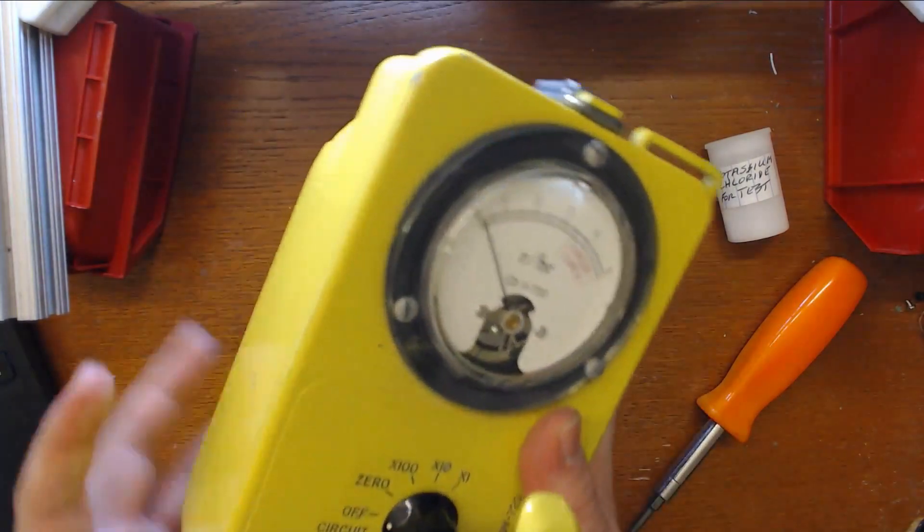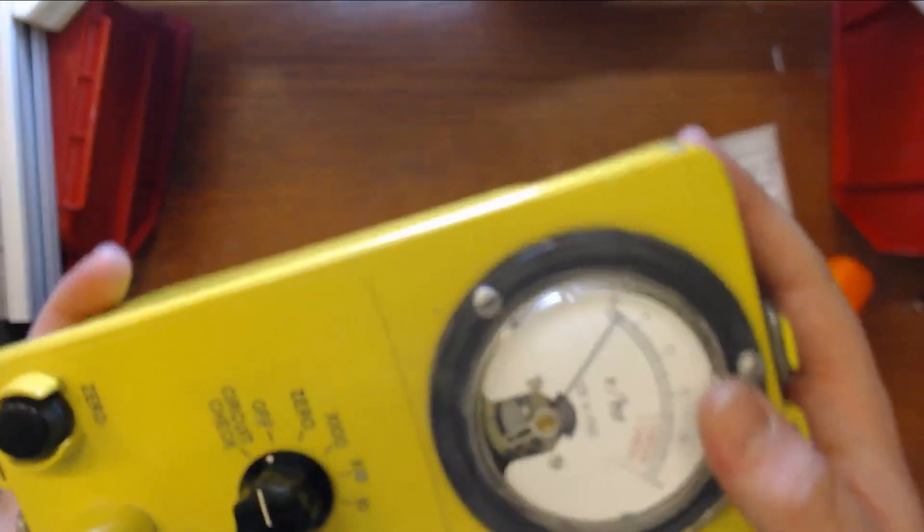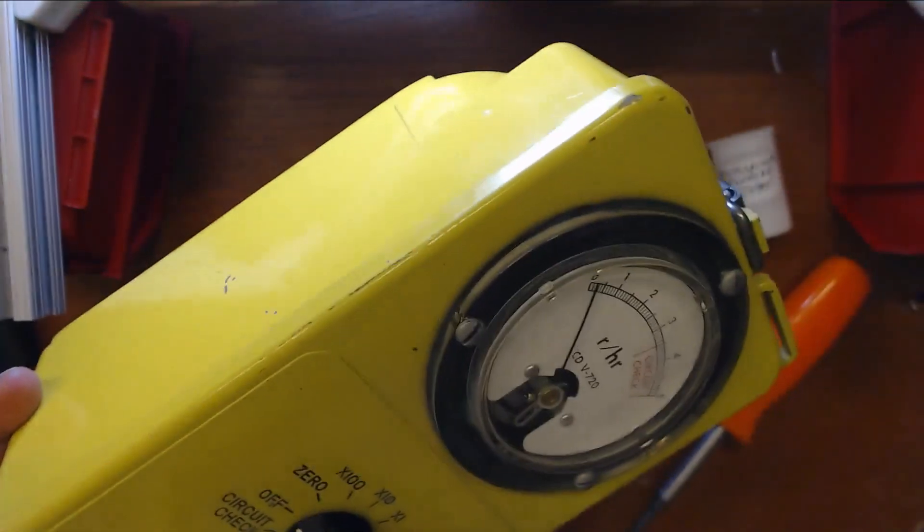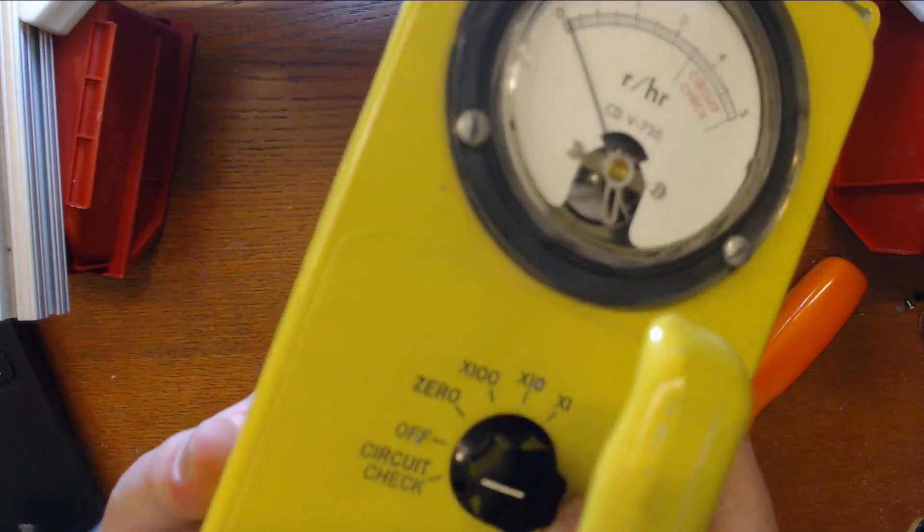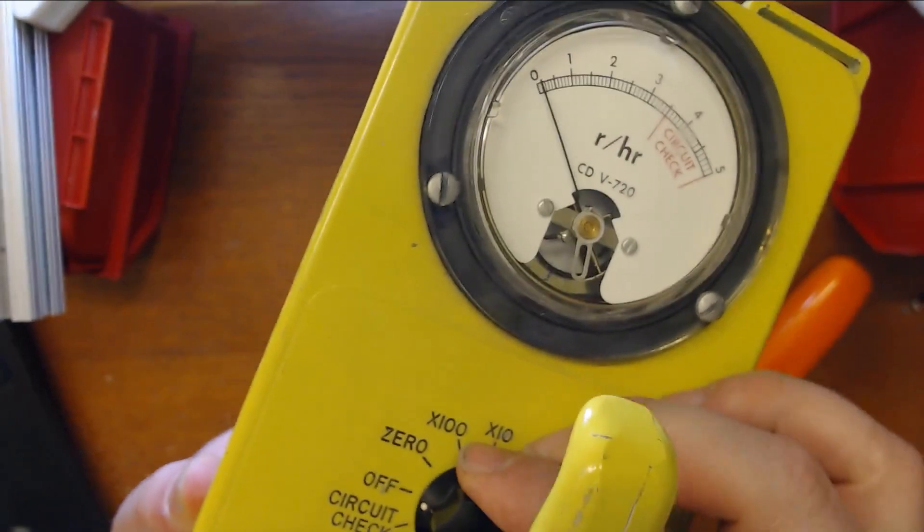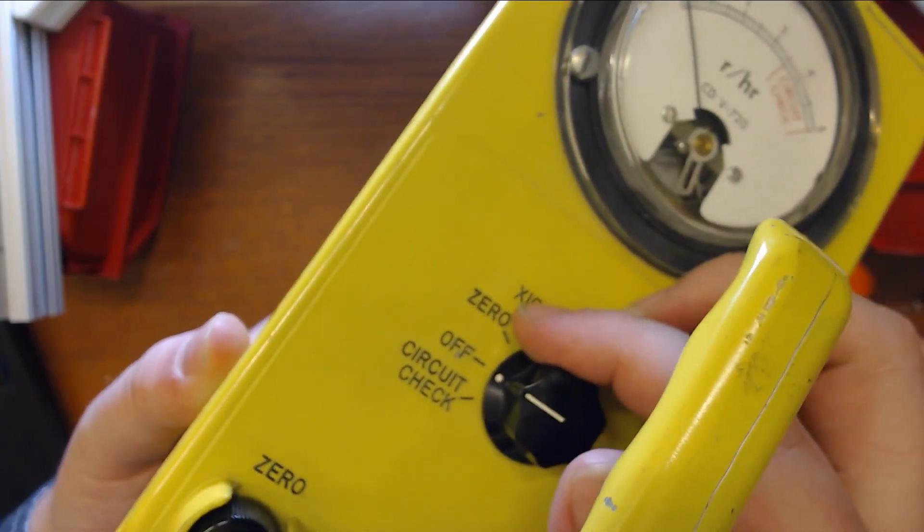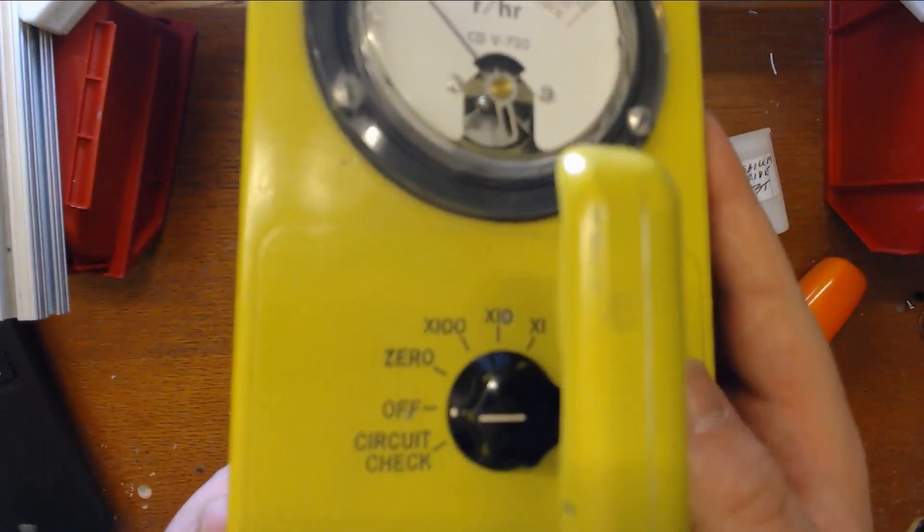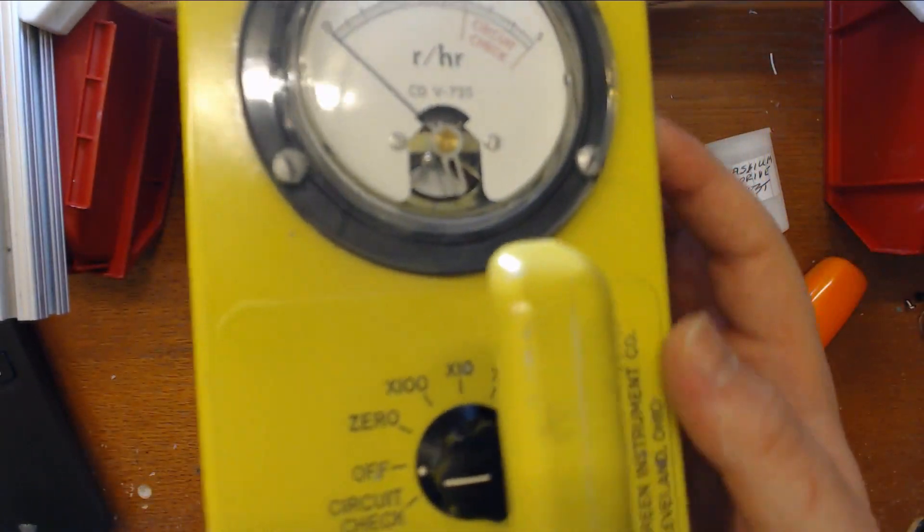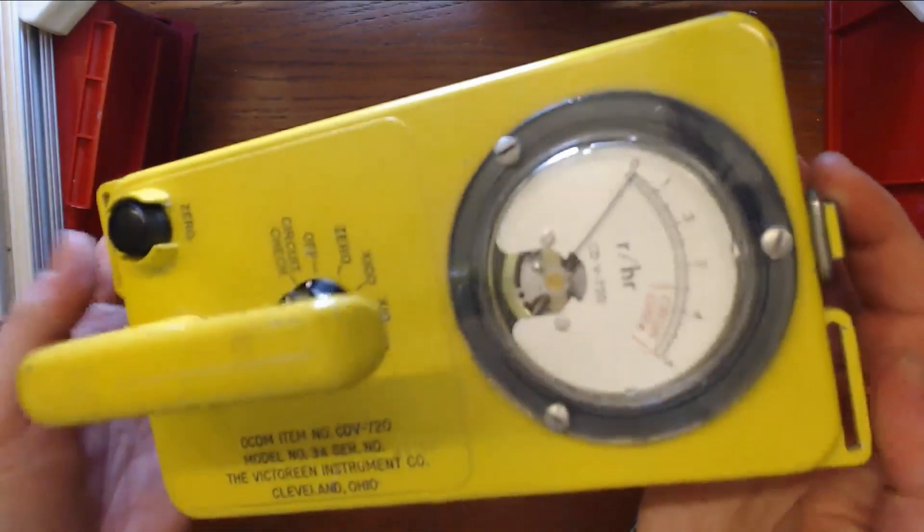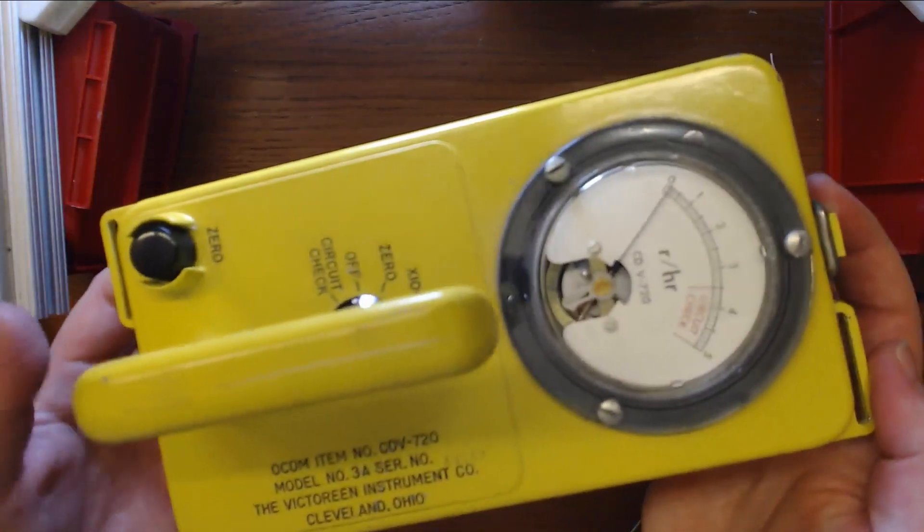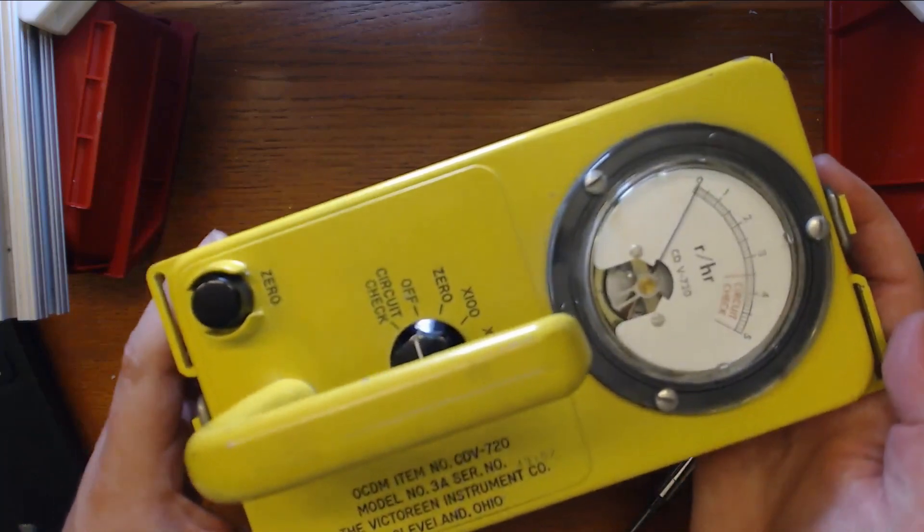The features of it are pretty simple. It's got this meter at the top, which is just an analog panel meter. It's got a six-position selector switch here, which has an off-position circuit check that evaluates the functionality of the device. Zero is for calibration, and then you have times 100, times 10, and times 1 scales there. And other than that, it's just got a couple of clips on the outside, and a couple places you could put a shoulder strap on in case you wanted to take this with you into the wasteland.